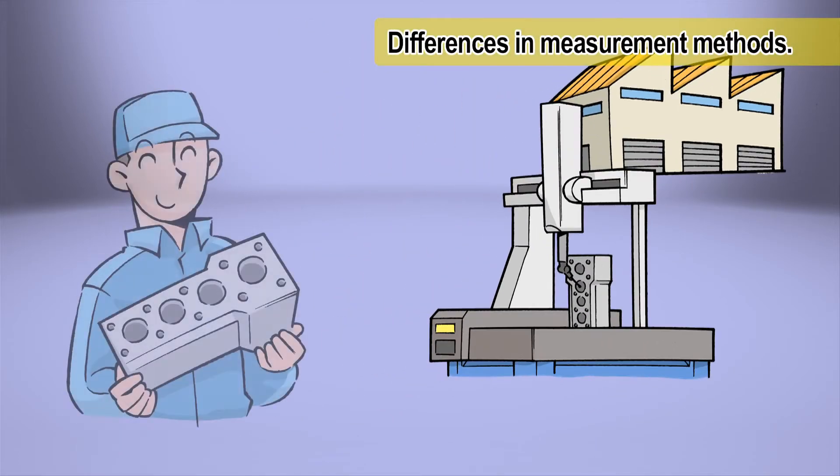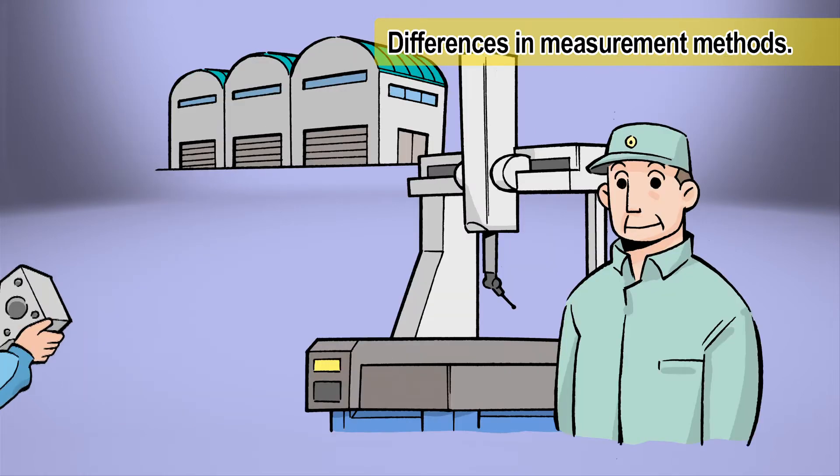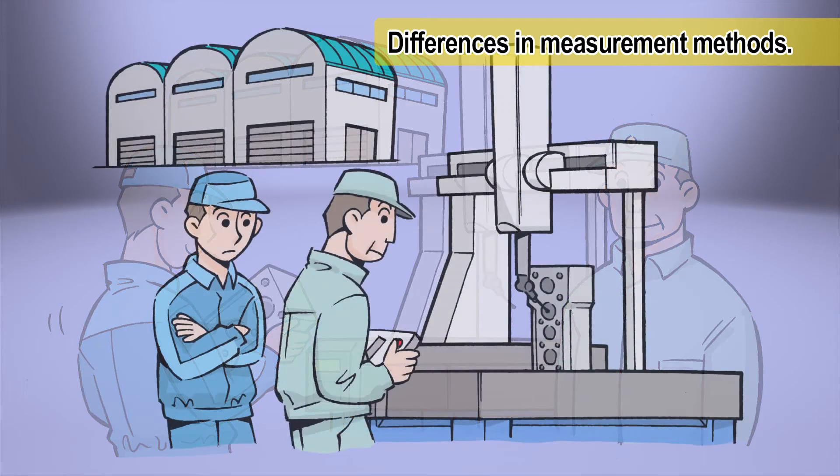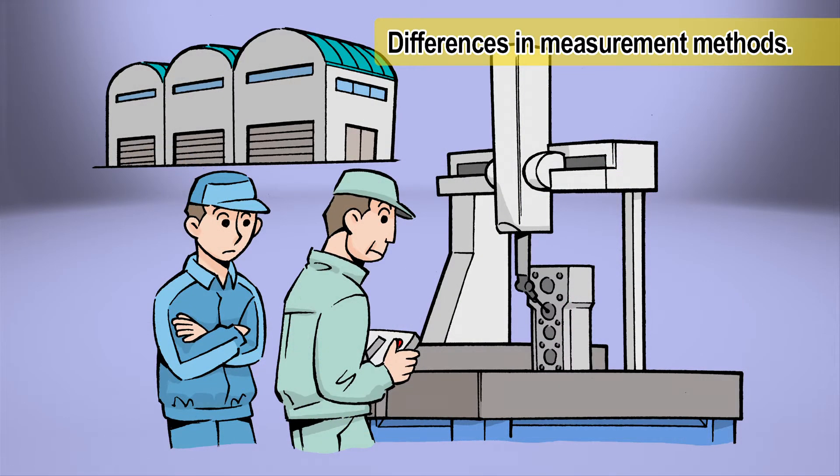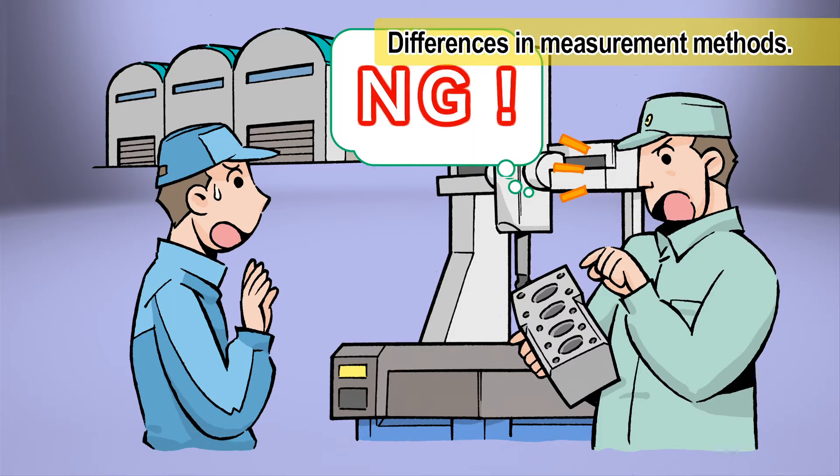Outgoing inspections are made and, naturally, only quality product is shipped. Incoming inspections are also made by the customer. Items that are seen as quality products at the time of shipment can sometimes be seen as defective during incoming inspections.